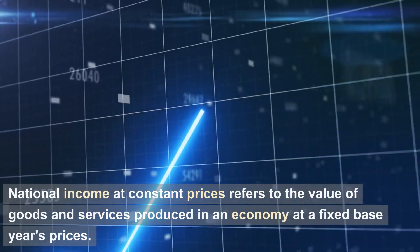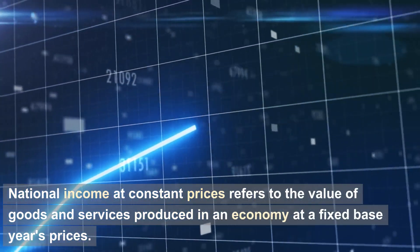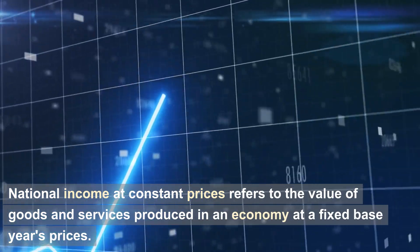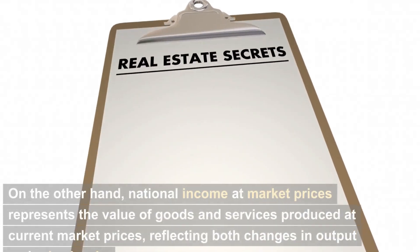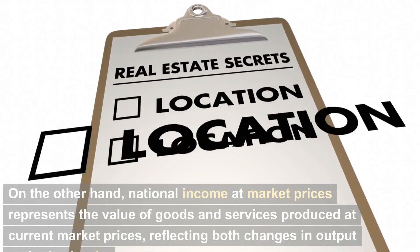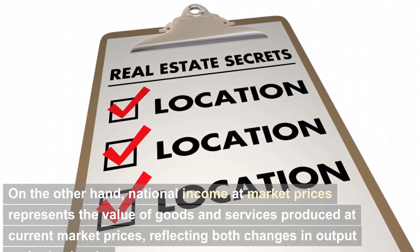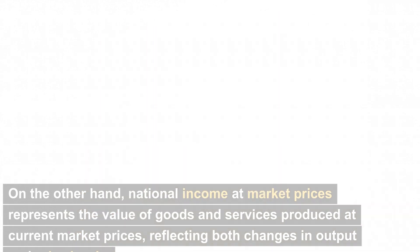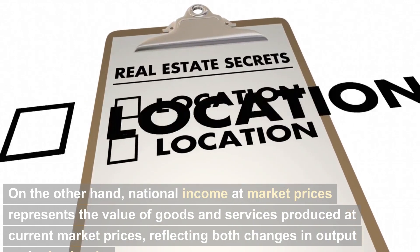National income at constant prices refers to the value of goods and services produced in an economy at a fixed base year's prices. On the other hand, national income at market prices represents the value of goods and services produced at current market prices, reflecting both changes in output and price levels.